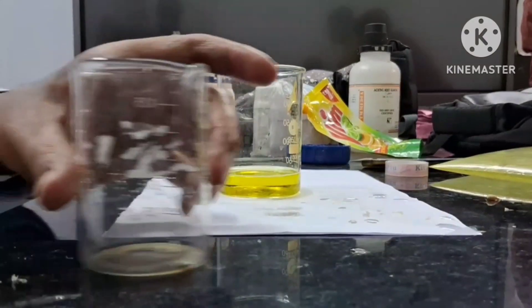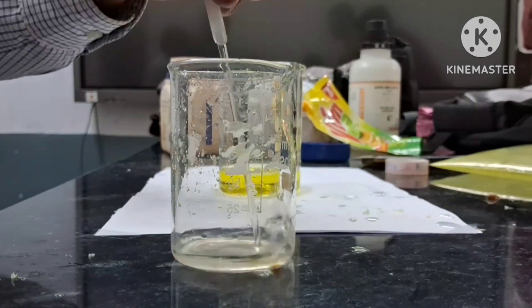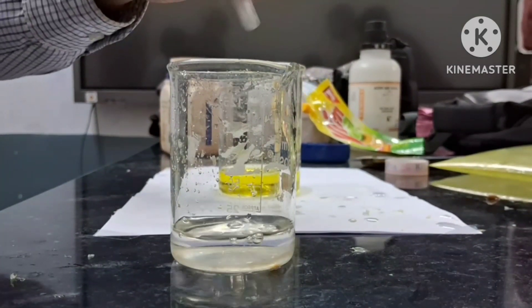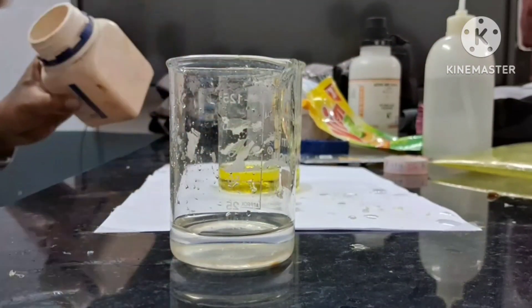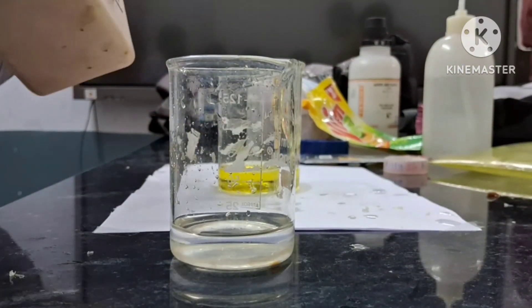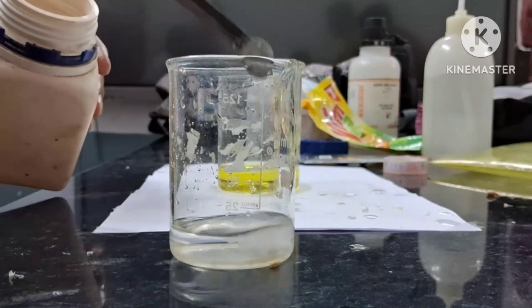In another beaker we will prepare a solution of sodium bicarbonate, and then we will add this solution to the soap solution containing glacial acetic acid.